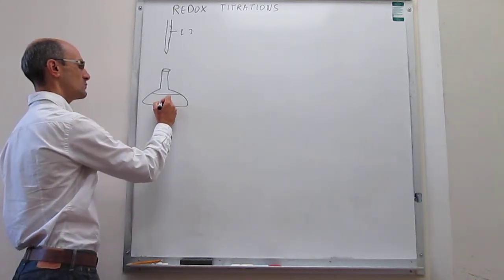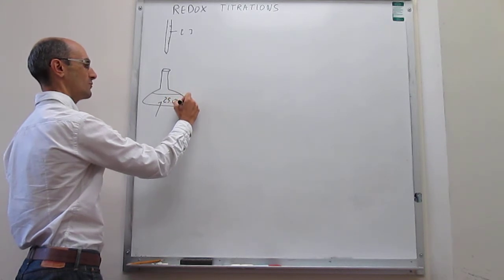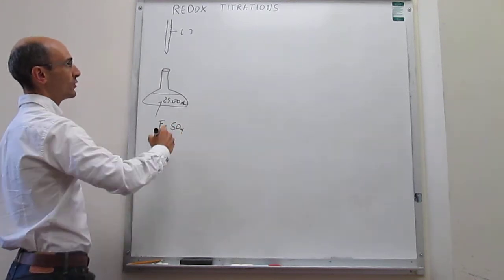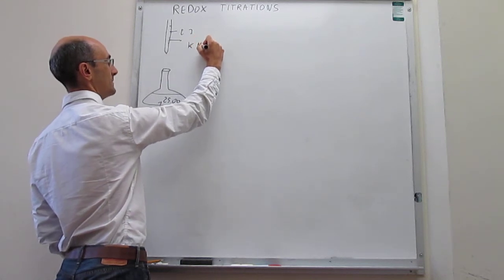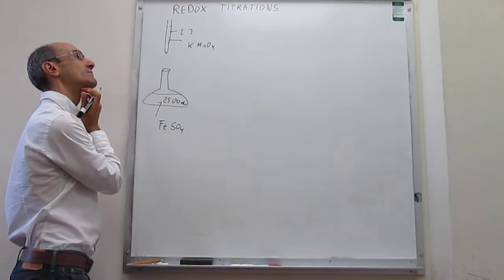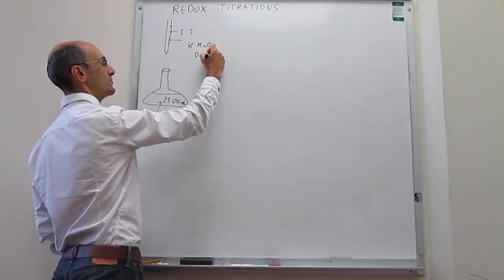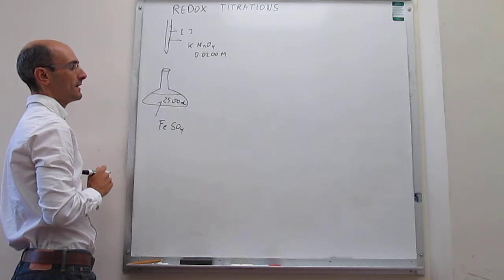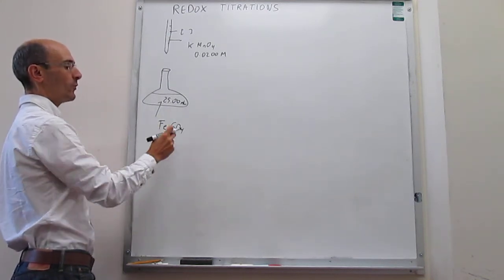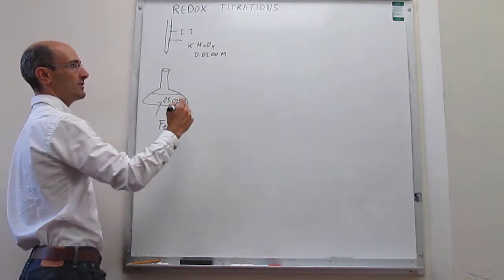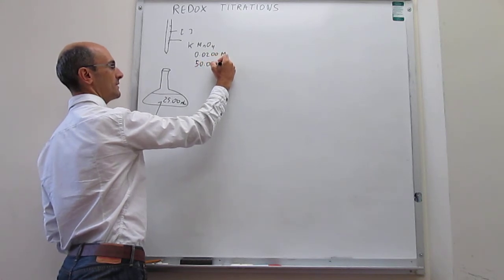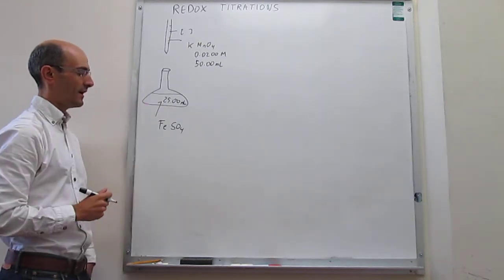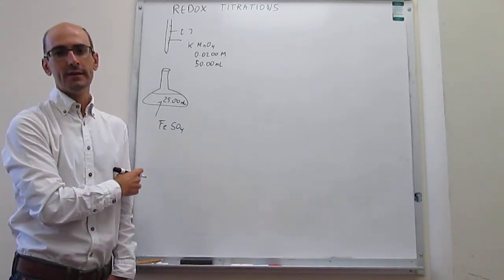Our example is going to be as follows. We have 25 mL of a solution of iron sulfate of unknown concentration, and then we're going to titrate this with potassium permanganate. We know the concentration of the potassium permanganate — it's 0.02 molar. We start to drop potassium permanganate into the iron sulfate, and eventually we get to the stoichiometric point. There's a change in color, we stop, and we find that we have added exactly 50 mL of the potassium permanganate solution. The question is: what is the concentration of the iron sulfate?